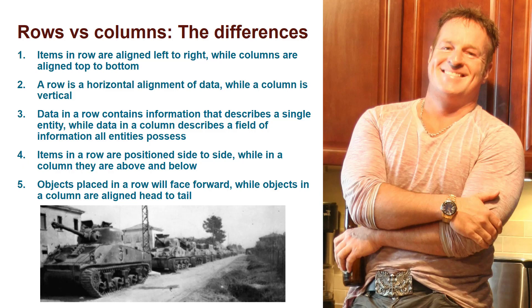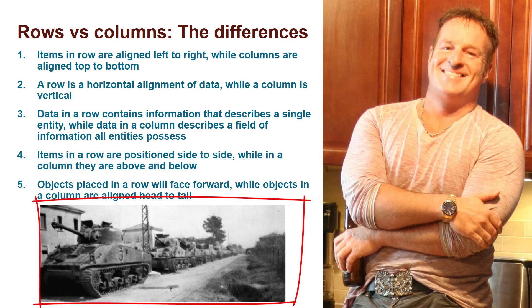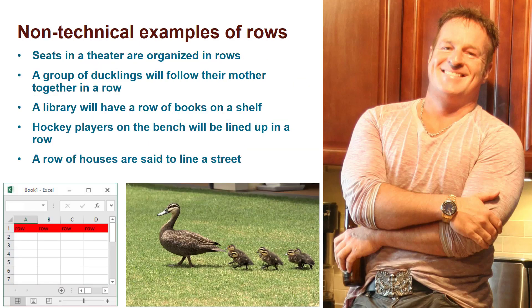Here's an example that gets us a little bit outside of the database and spreadsheet types of technical examples. Objects placed in a row will typically face forward, while objects said to be in a column are aligned head to tail. I've got an image here of a tank column — the tanks are all following each other head to tail. Sometimes the word column is used like that. Whereas if you think of hockey players, they're all on the bench looking the same way — we would call that a row. So there are some non-technical examples of rows and columns.